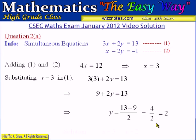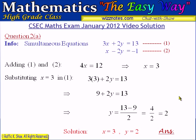We can now write our solution: x equals 3 and y equals 2. That's the solution for that pair of simultaneous equations. Let's now look at question 2b.